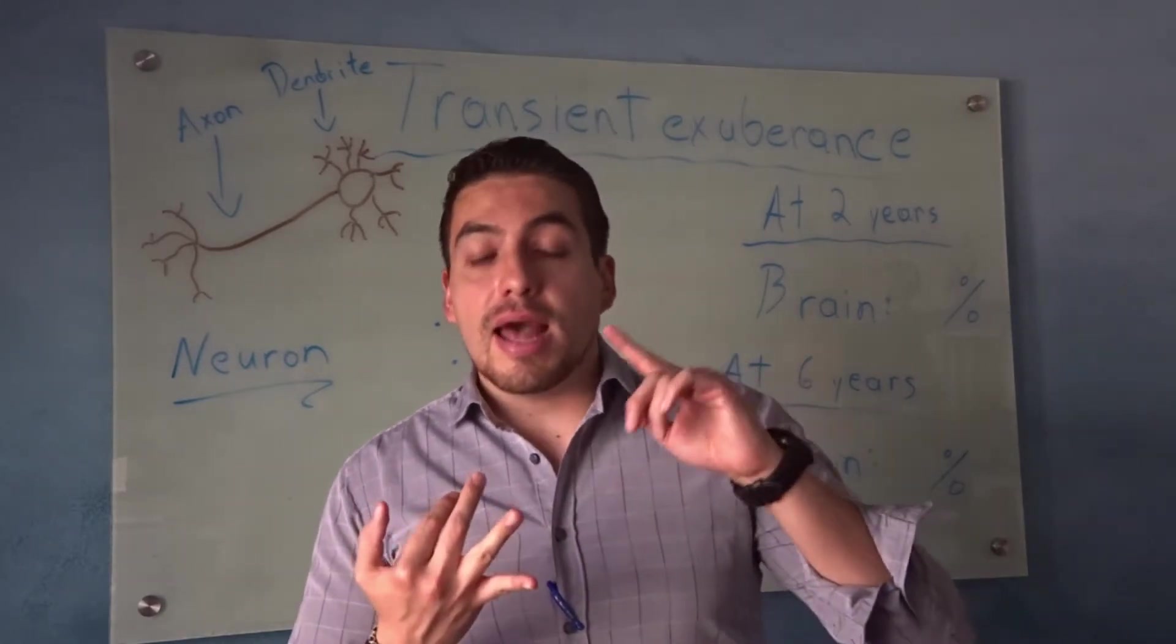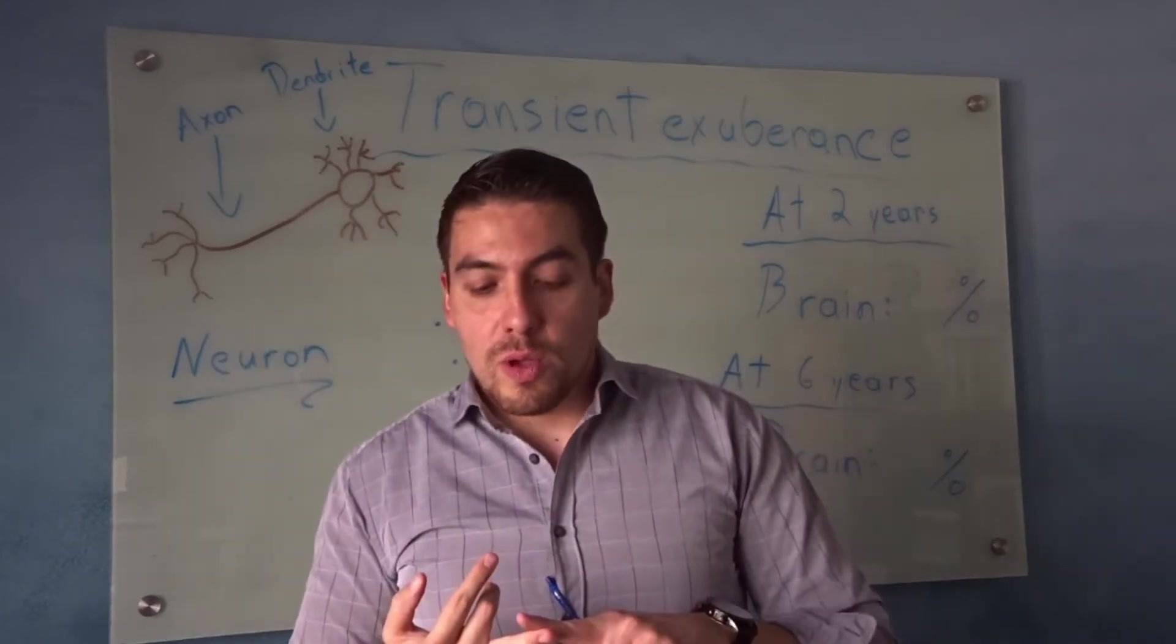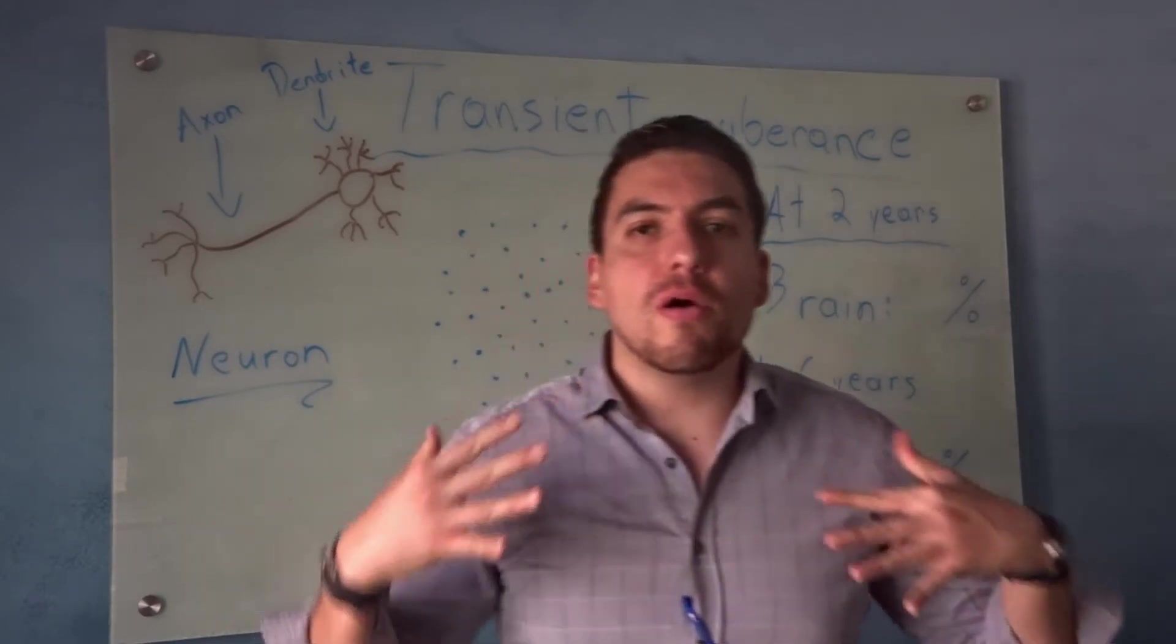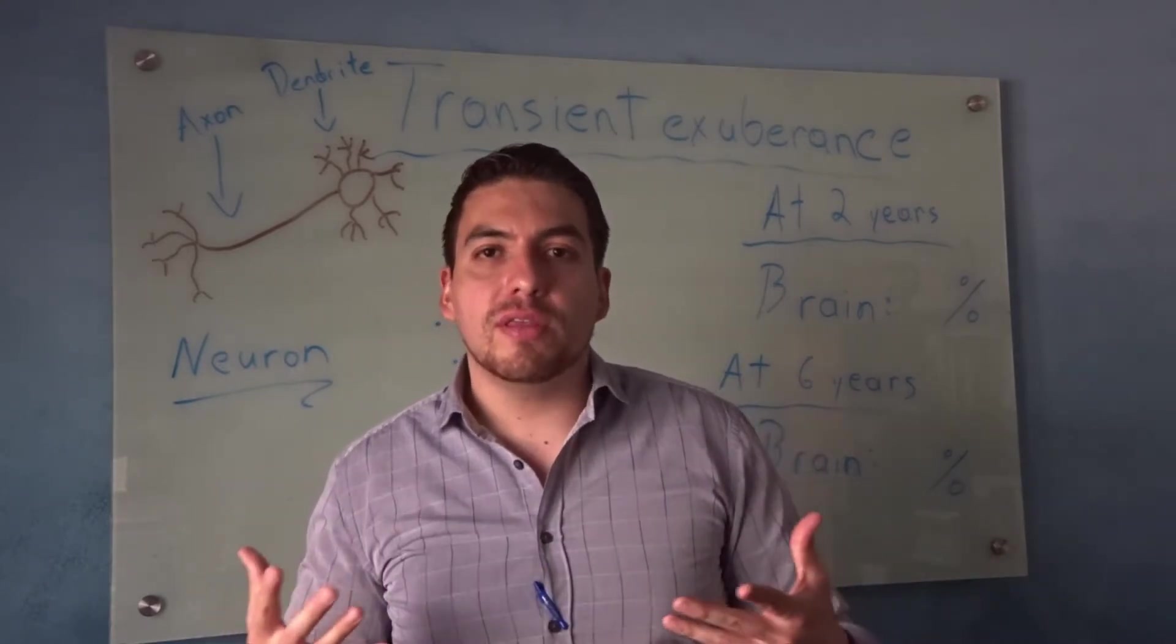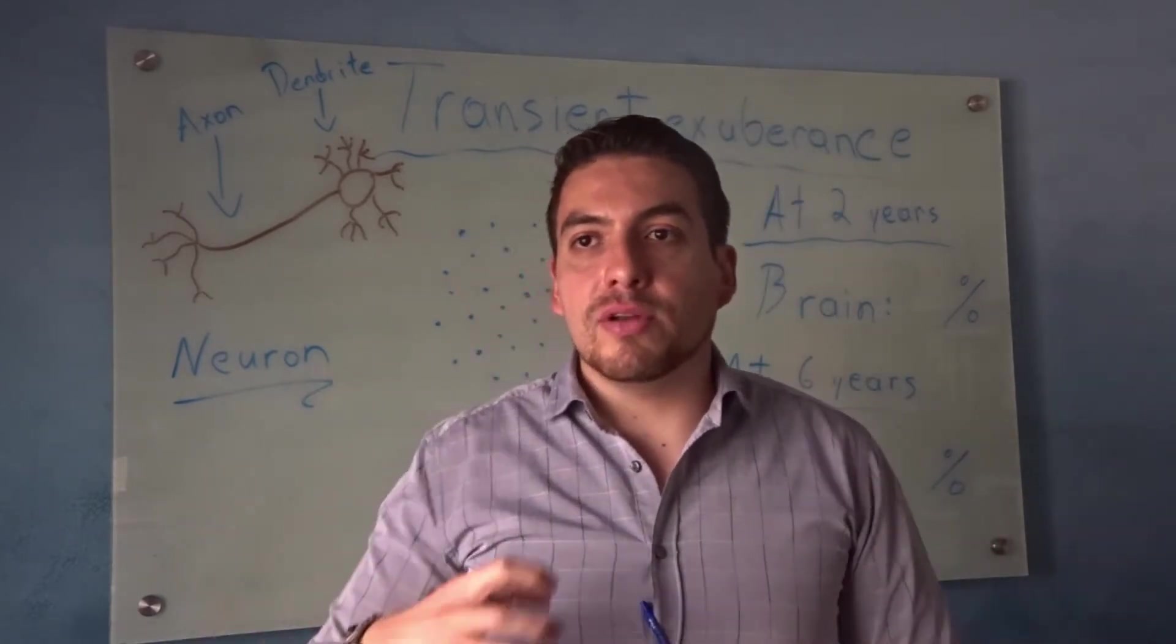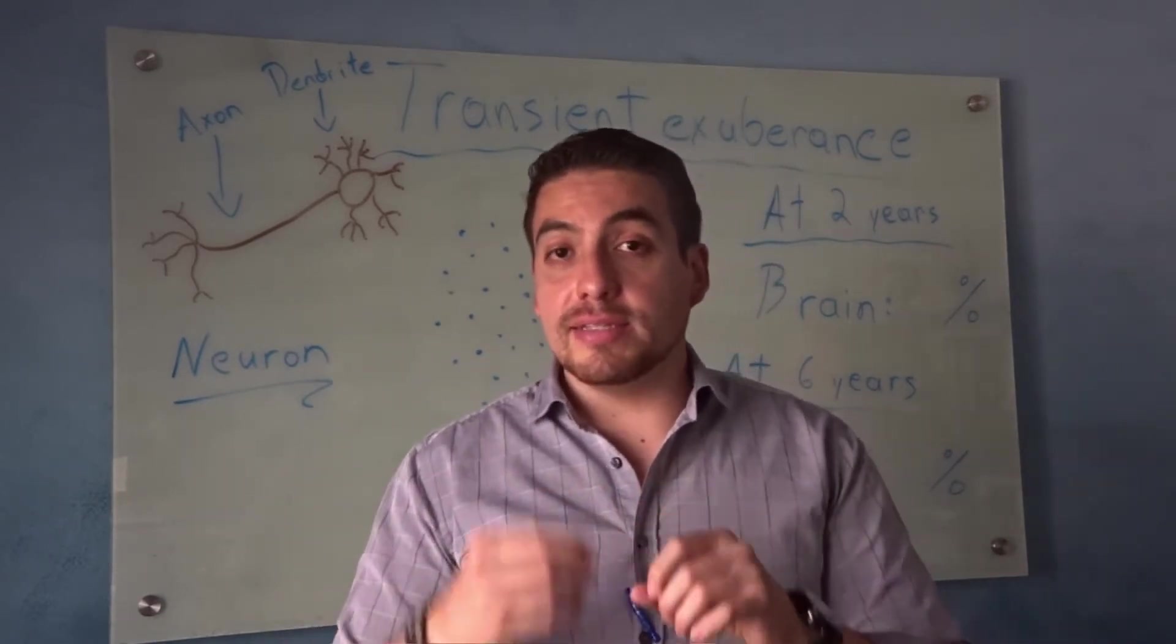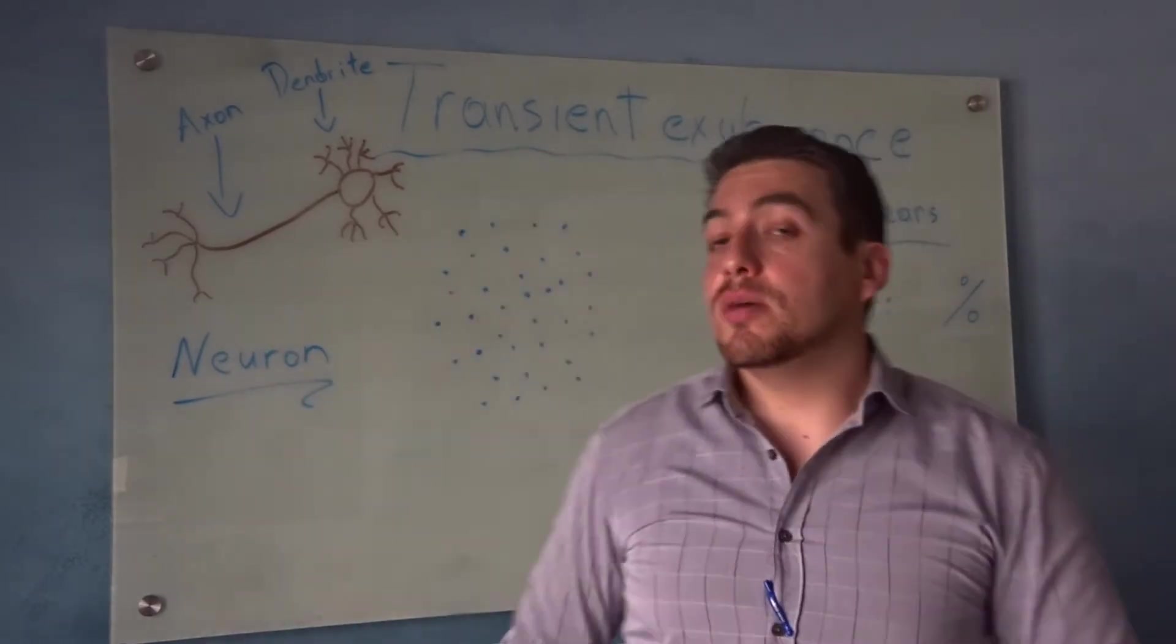The most important thing about neurons is that they allow communication within everything in our brain. Think of our body like a vehicle, like a car. We can have all the parts there - muscles, skin, bones - but if we don't have a brain, none of that works. Think of a car with everything in it but no engine - it wouldn't run.